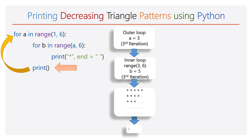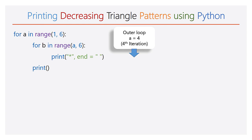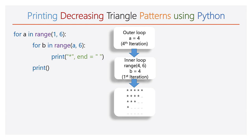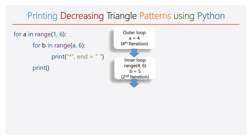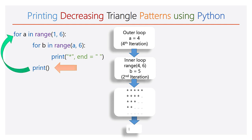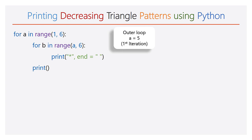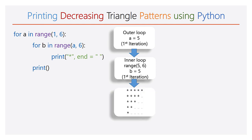Again the execution will go to the outer for loop. The value of a will be 4. The range of b will be 4 to 6. Now the inner for loop will iterate 2 times. During the first iteration, 1 star is printed. During the next iteration, 1 more star will be printed. Again the empty print function is executed and the cursor will take the new line. The execution will go to the outer for loop. Now the value of a will be 5. The range of b will be 5 to 6. Now the inner for loop will iterate only 1 time. Hence 1 star will be printed in the 5th line.